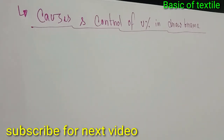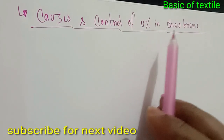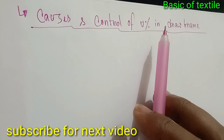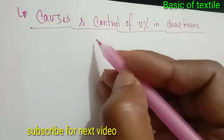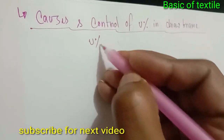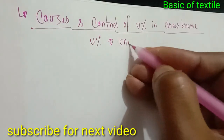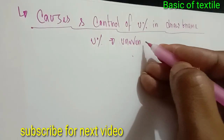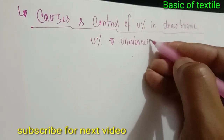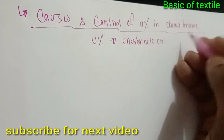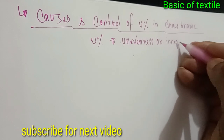U% means unevenness or irregularity. U% below means unevenness or irregularity in the yarn or sliver.